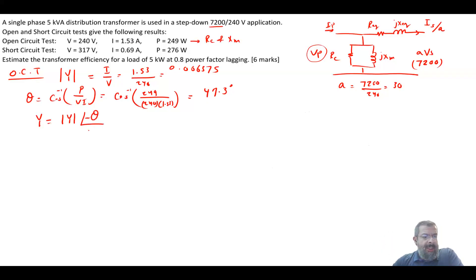Now your Y will equal to the magnitude of Y angle minus theta, because this is an admittance. So this will be equal to 0.006375 angle of minus 47.3, which is equal to 0.0043 minus J0.0047. And this will equal to 1 over RC minus 1 over JXM. So from this, you can find your RC equal to 232.6 ohm, and XM is equal to 212.8 ohms. Now these two are referred to the low voltage side.